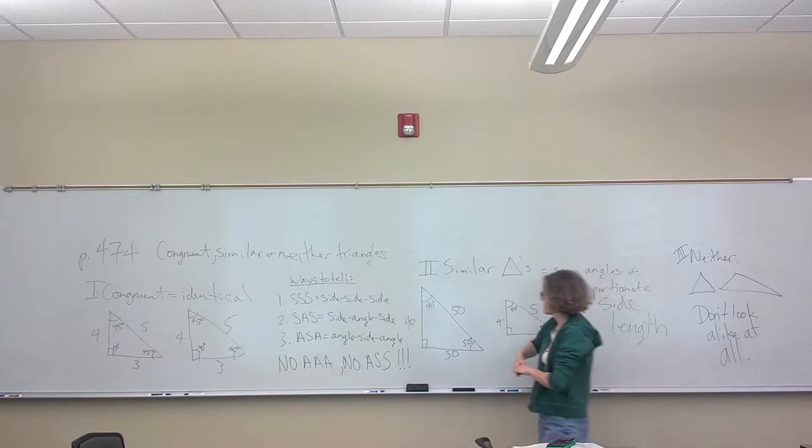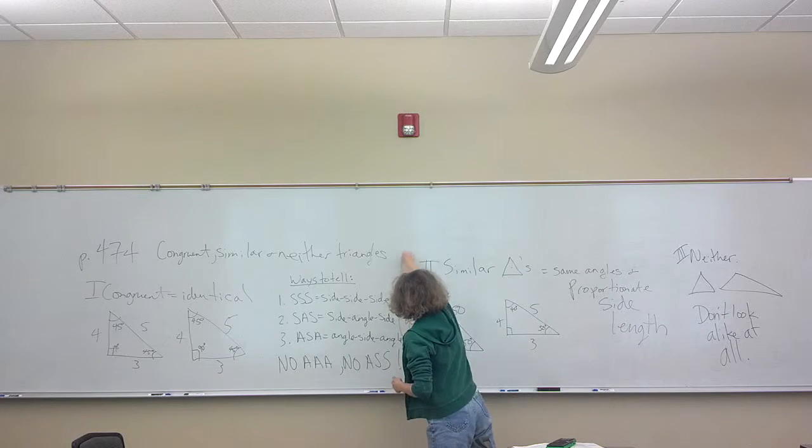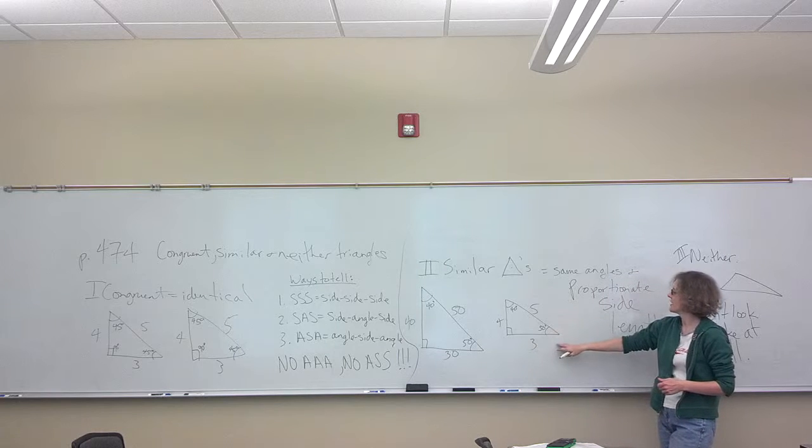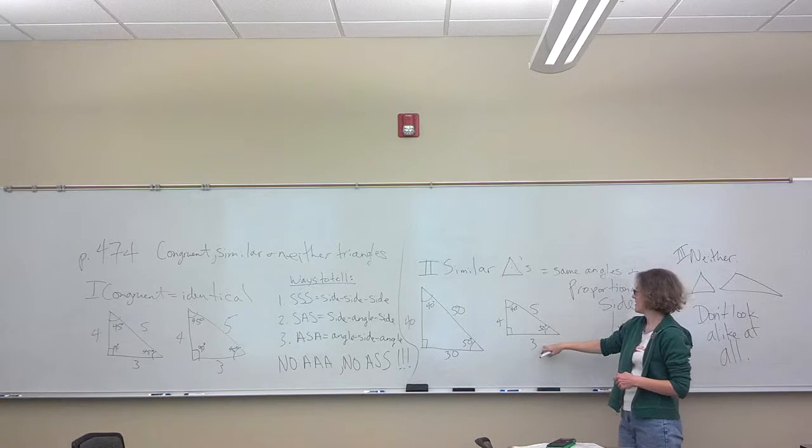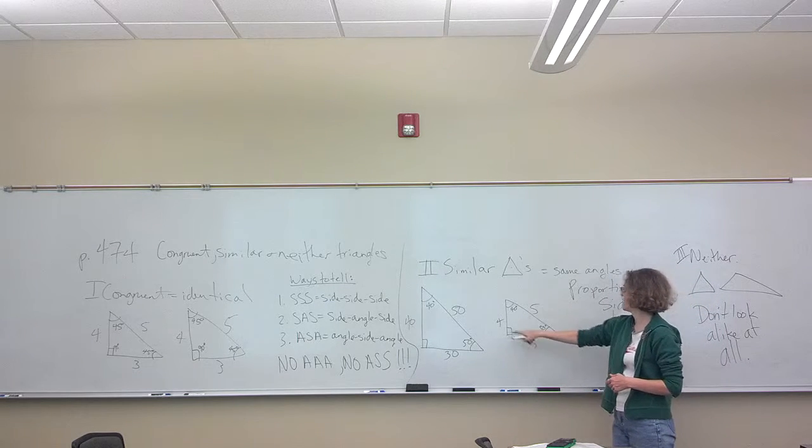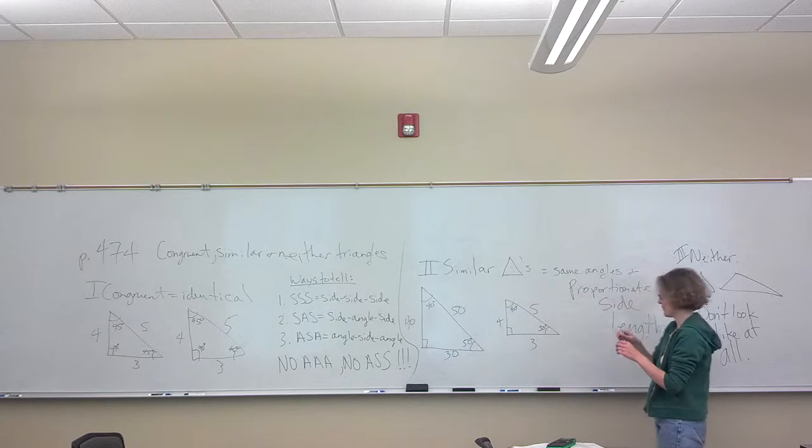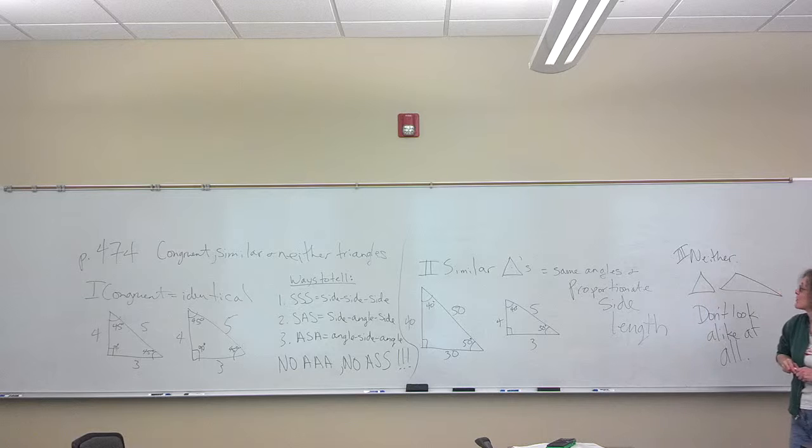You'll notice if you have this first triangle over here, the bigger one, you have 30, 40, and 50 in the sides. The next one over here is decreased by a power of 10, so we have 3, 4, and 5. So we've taken these numbers and divided them by 10 to get this one. And that's what a similar triangle is.